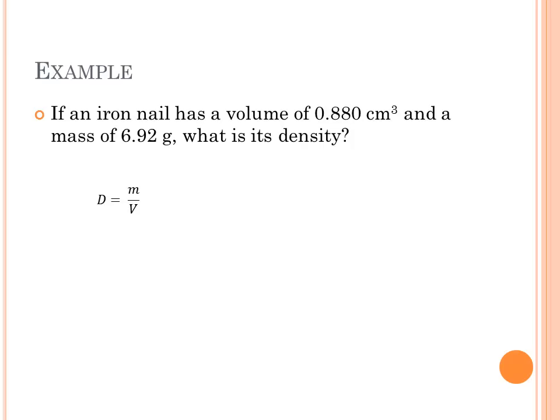So if we use d equals m over v, we just plug in our numbers. 6.92 grams divided by 0.880 cubic centimeters, and we get 7.86 grams per cubic centimeter.